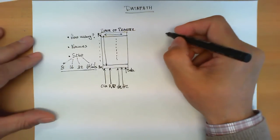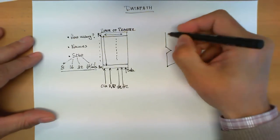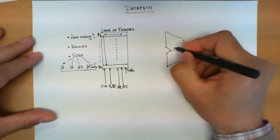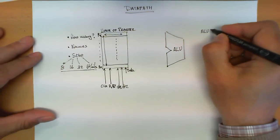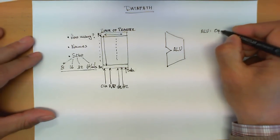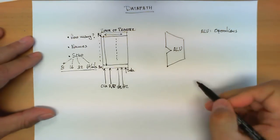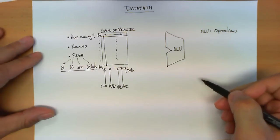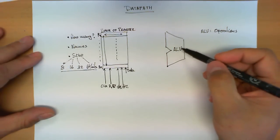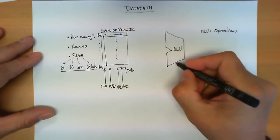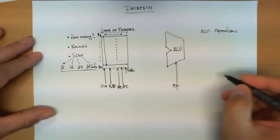The second element present in most data paths is what we call the ALU, or Arithmetic Logic Unit. The ALU is basically in charge of executing several operations. Another way of looking at this element of the data path is as a very versatile piece of circuit which can perform several operations depending on a control signal, which we are going to call OP.